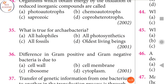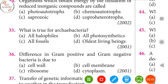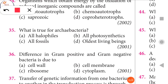Next question: The difference in Gram-positive and Gram-negative bacteria is due to which of the following? The right answer is the cell wall.